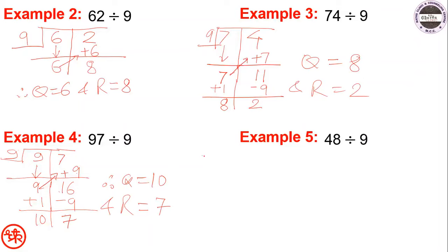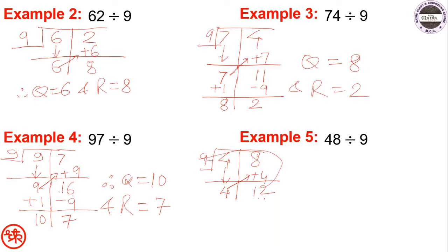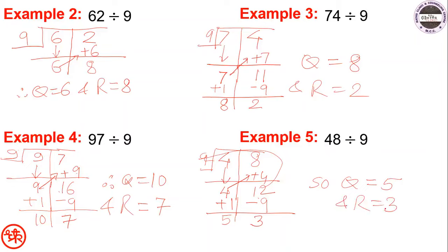Next example: 48 divided by 9. Divide into two parts 4 and 8. Draw horizontal line, write 4 under 4, then add this 4 to the right digit: 8 plus 4 is 12. Since 12 is greater than 9, we do minus 9 and plus 1. So 4 plus 1 is 5, and 12 minus 9 is 3. Therefore quotient equals 5 and remainder equals 3.